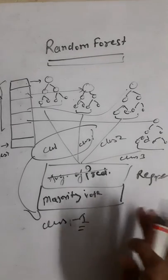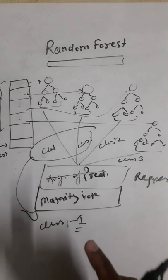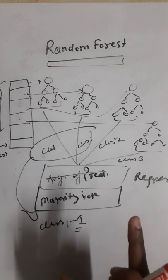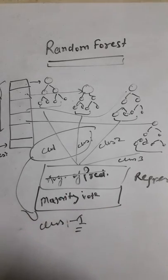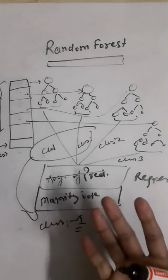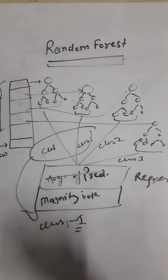The other thing which is resolved in Random Forest which was earlier there in decision trees - here we do not generally get in the trap of overfitting, which generally happens in the decision trees concept.